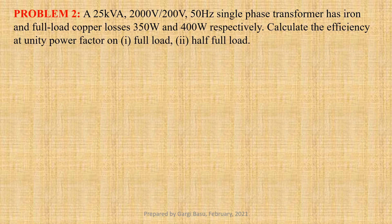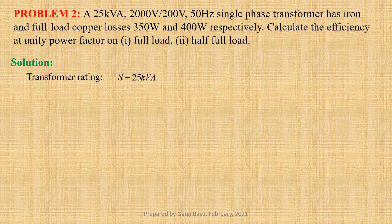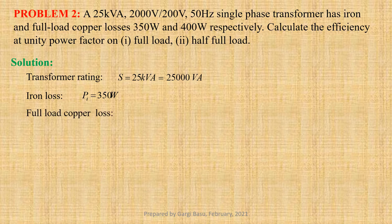Problem number 2. A 25 kVA, 2000 volt by 200 volt, 50 Hz single phase transformer has iron and full load copper losses of 350 watt and 400 watt respectively. We have to calculate the efficiency at unity power factor at full load and at half full load. Transformer rating S equals to 25 kVA, that is 25,000 volt ampere; iron loss P_I equals to 350 watts; full load copper loss P_copper_FL equals to 400 watts; power factor cos phi 2 equals to 1.